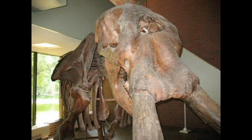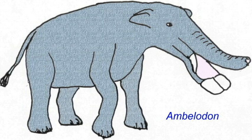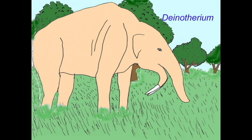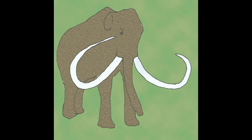Later groups of elephants would include some from Southeast Asia which had shovel-like lower jaws, and the giant deinotheres which had large tusks only in their lower jaws.